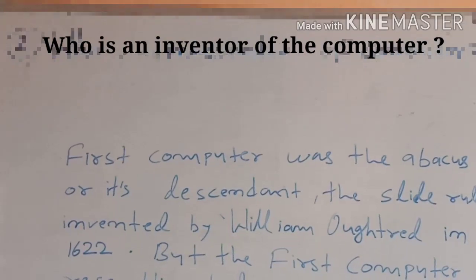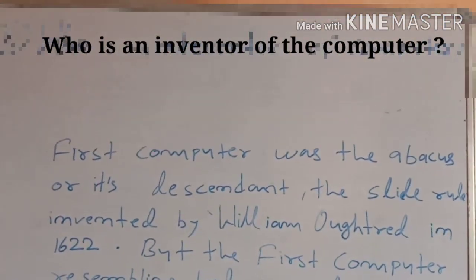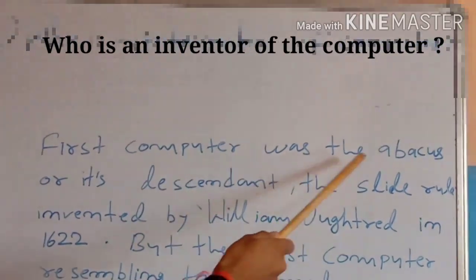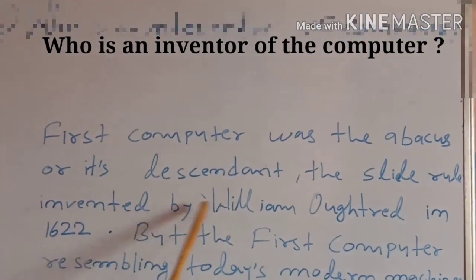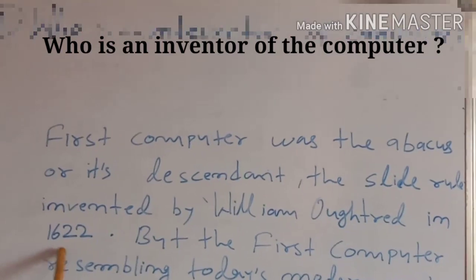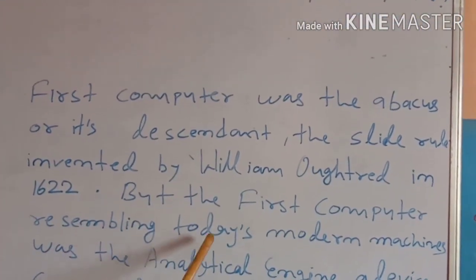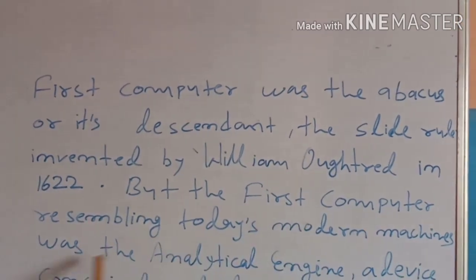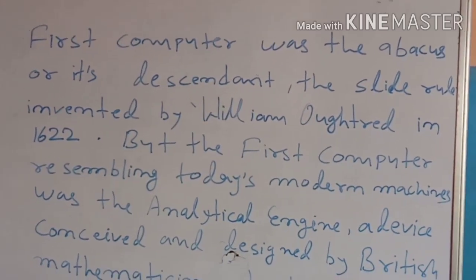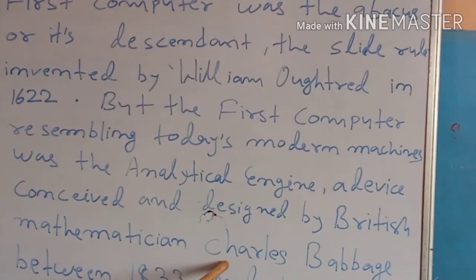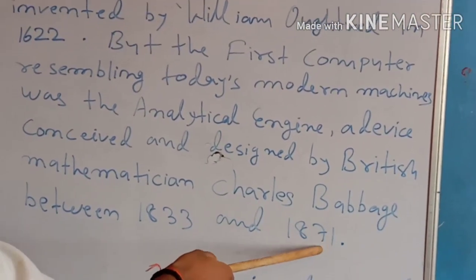If anyone asks who is the inventor of the computer, you can say that the first computer was the abacus, or its descendant the slide rule, invented by William Oughtred in 1622. But the first computer resembling today's modern machines was the Analytical Engine, a device conceived and designed by British mathematician Charles Babbage between 1833 and 1871.